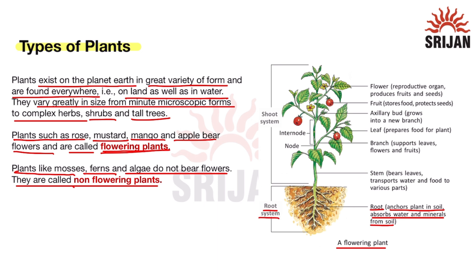The shoot system is present above the soil. It consists of the stem, which transports water and food to various parts of the plant, and branches, which support the leaves, fruits, and flowers.